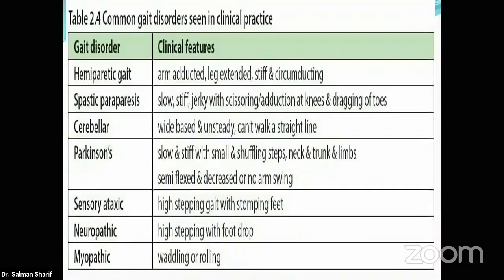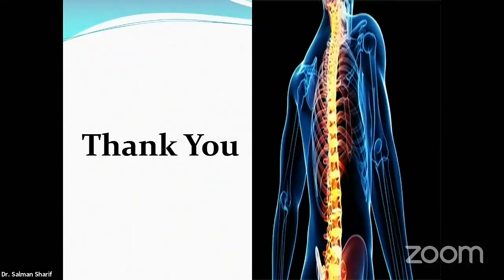Gait examination is extremely valuable — you can learn a great deal just by watching a patient walk. A hemiplegic gait shows the affected arm adducted with difficulty walking. A spastic gait (seen in dorsal or cervical spine disease) involves scissoring. A cerebellar gait is wide-based with inability to walk in a straight line. A Parkinsonian gait is slow, stiff, with small steps. Normal pressure hydrocephalus produces a wide-based, magnetic gait where the patient turns on a single spot.